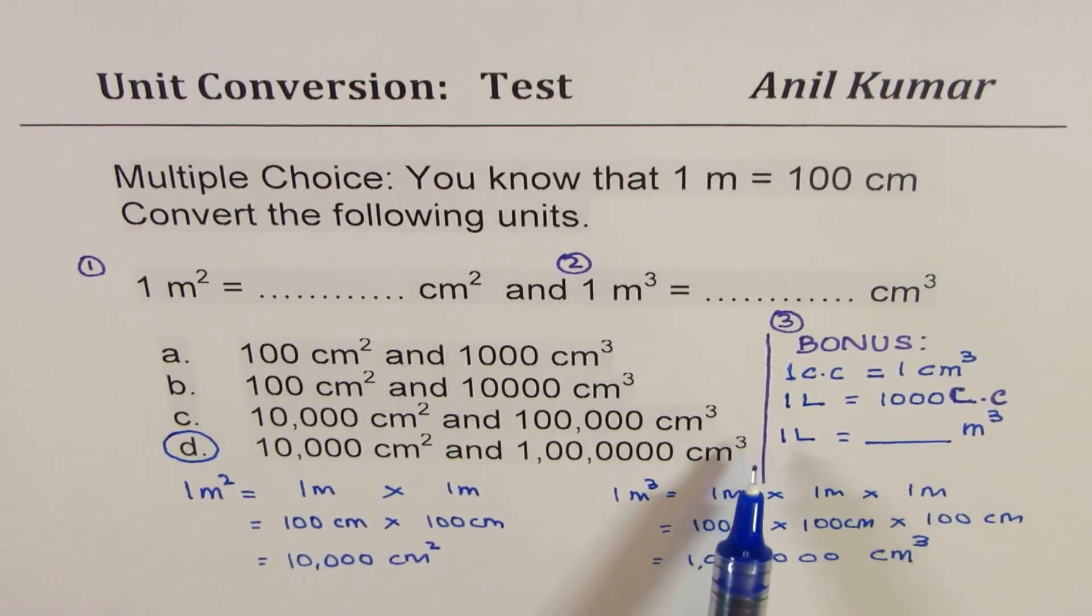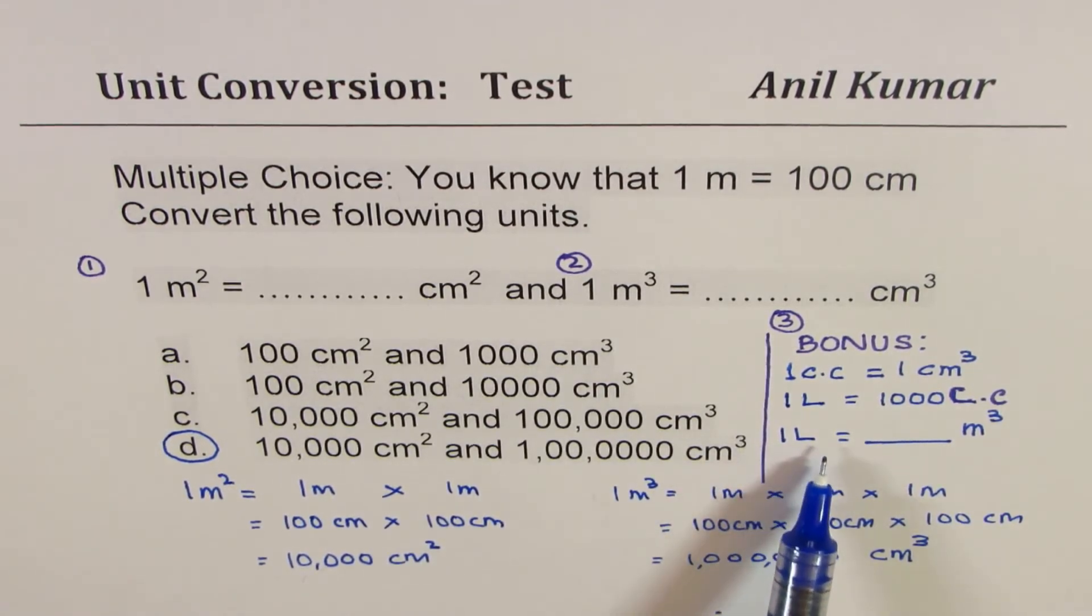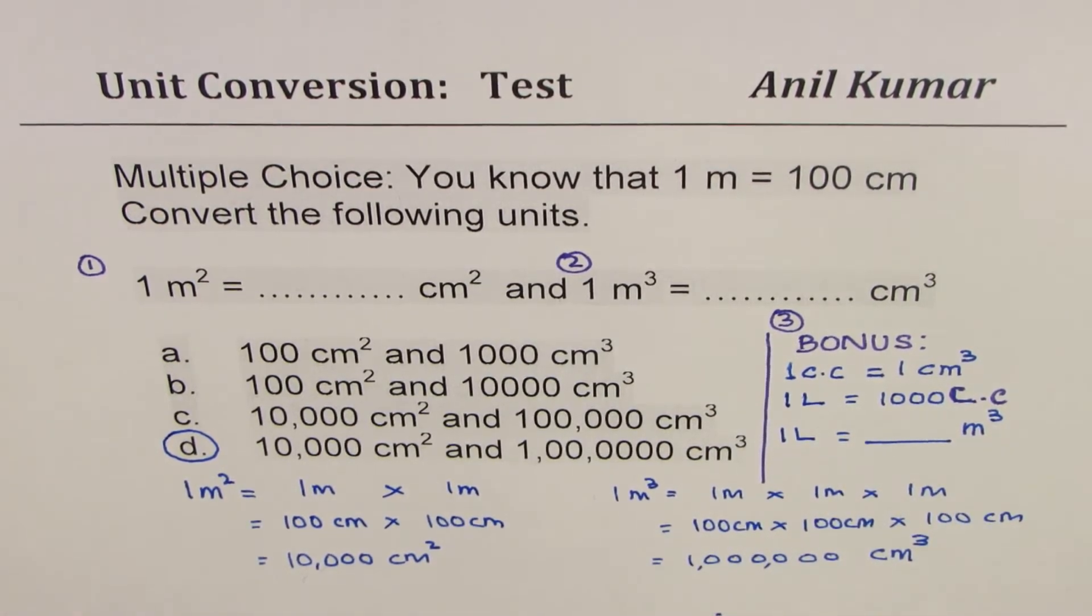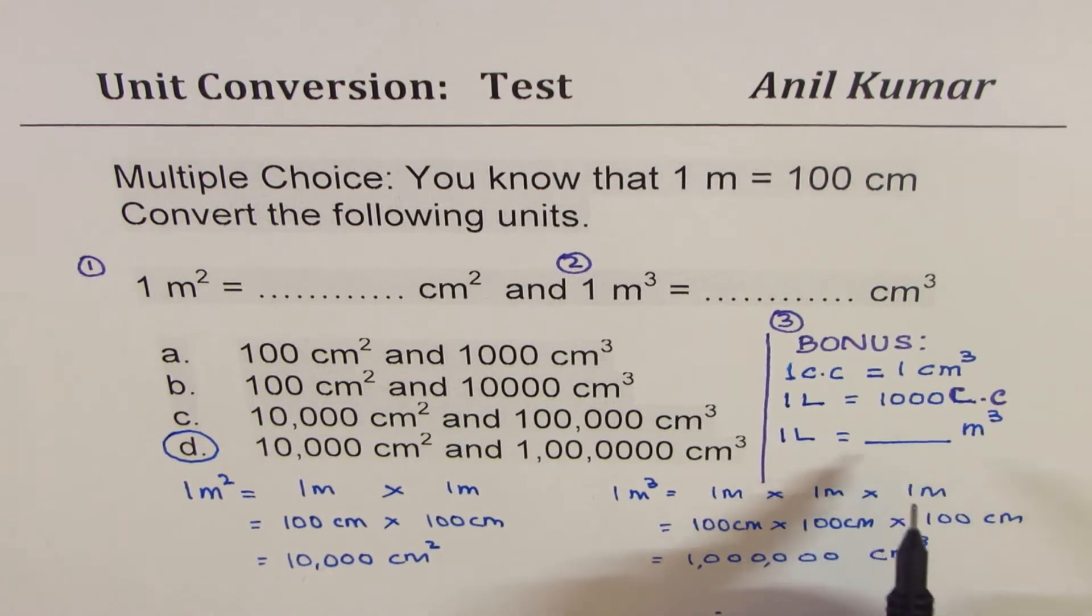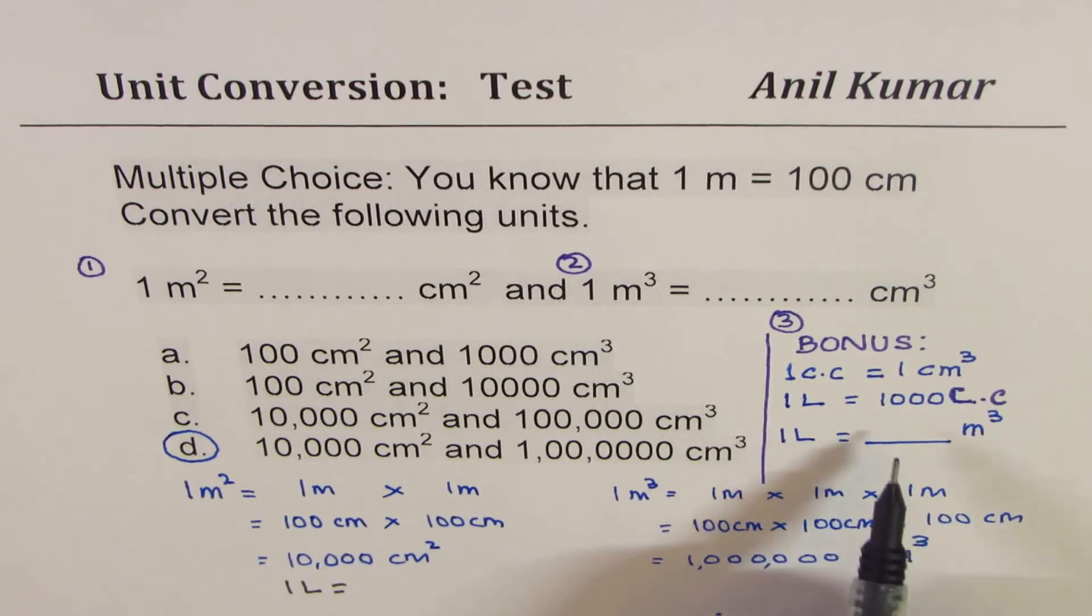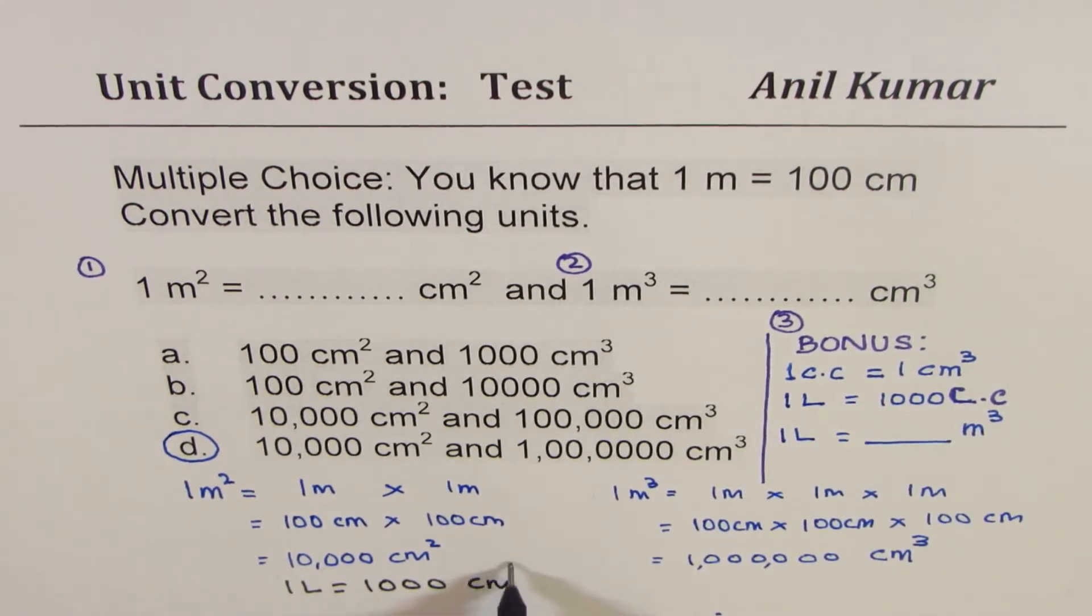Now, in this question, when we are talking about one liter is how many meter cube, let me rewrite this. One liter is basically equals to thousand centimeter cube. When we say it is thousand cc, it also means thousand centimeter cube.